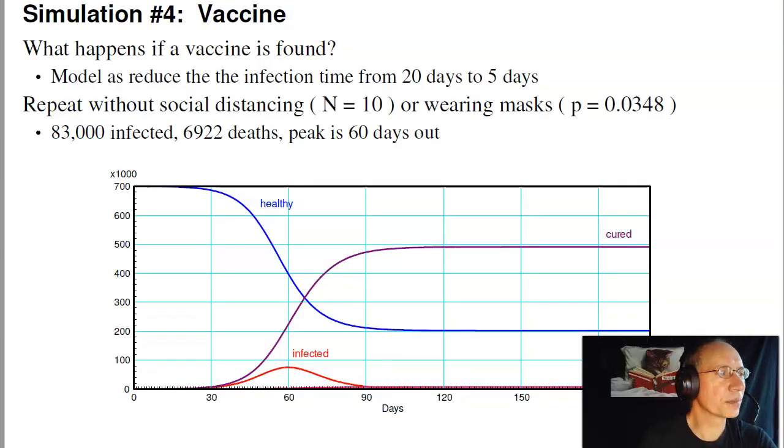Let's ask a fourth question. Suppose we came up with a vaccine. And just for the sake of simulation, suppose the vaccine says that instead of taking 20 days to recover from the disease, it only takes five days. What that means is the people that are infected are only infecting people for five days instead of 20.